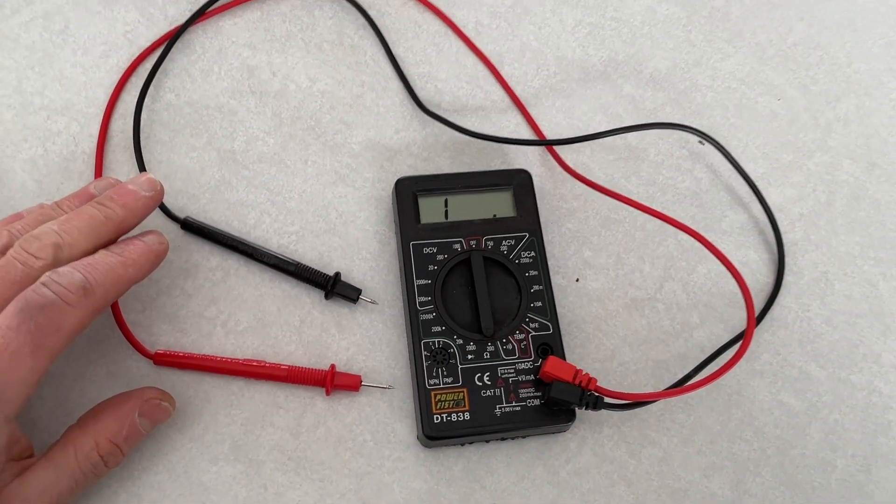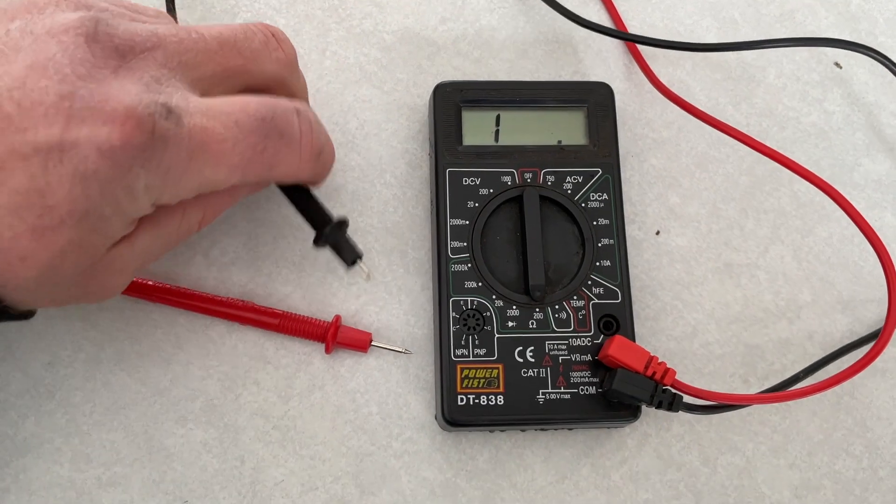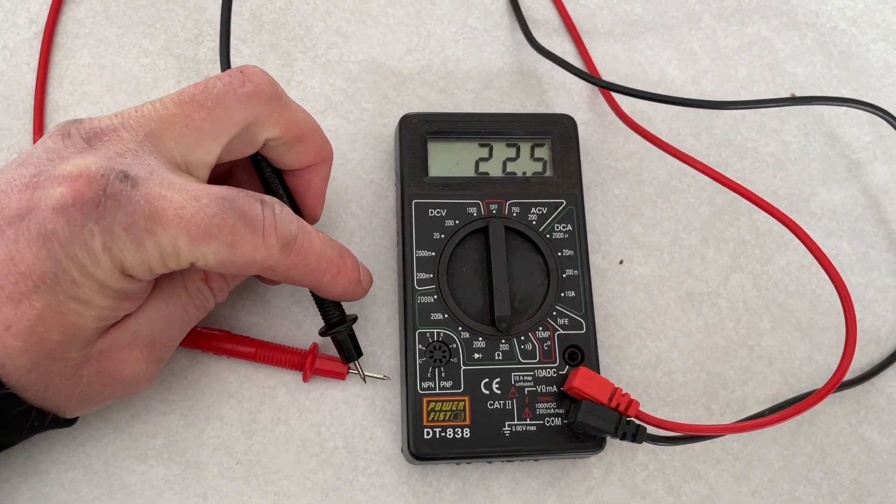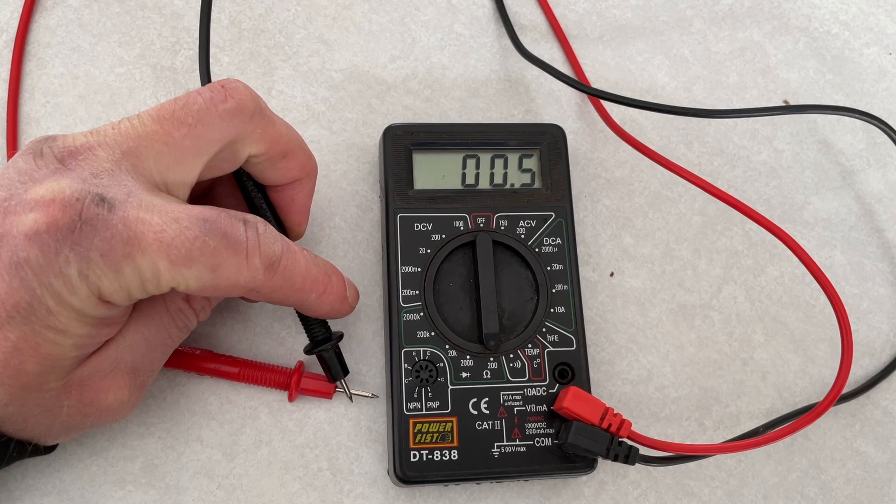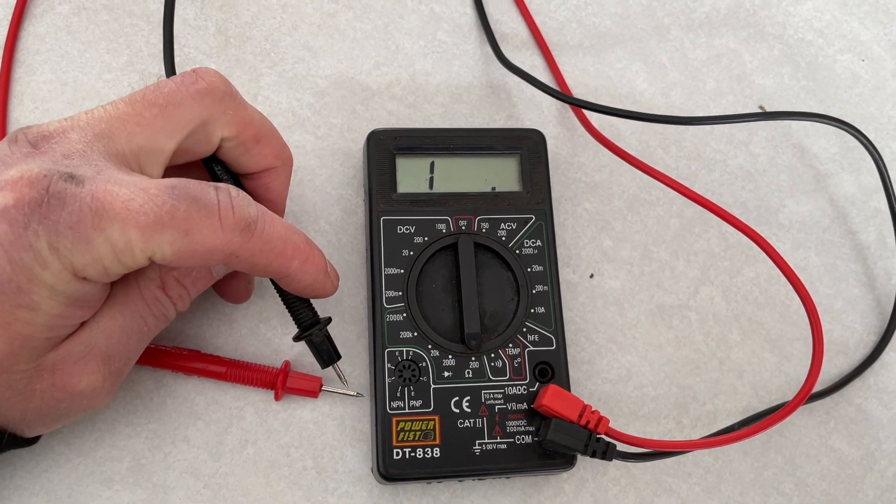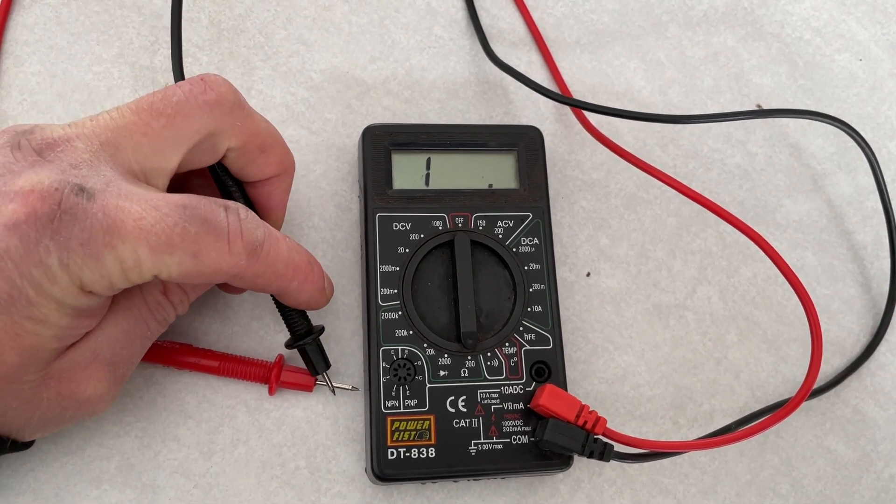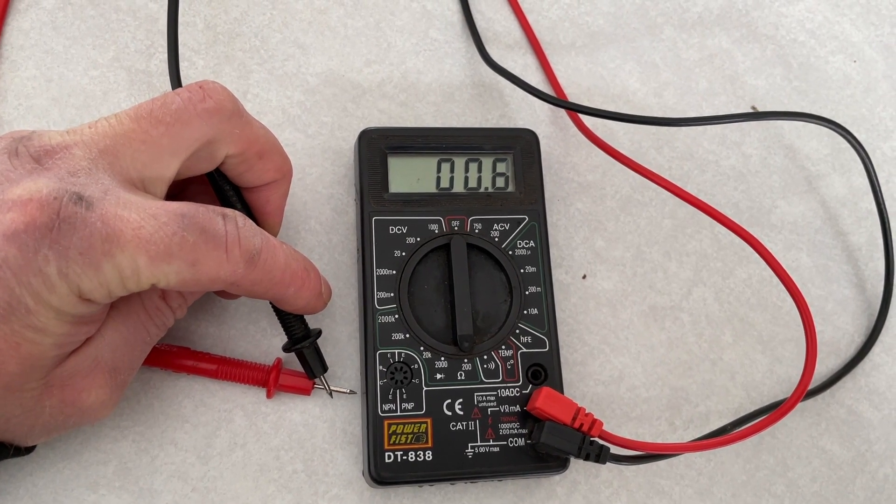Most multimeters will read a 1 when the test leads are not touching each other indicating an open circuit. If the leads touch each other the meter will read the resistance of the wires of the meter, in this case about 0.5 ohms.